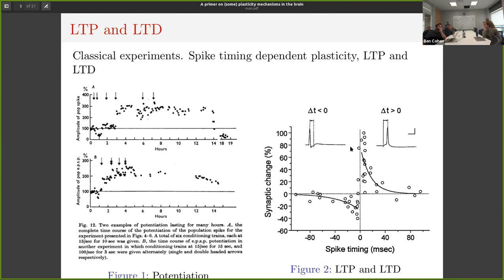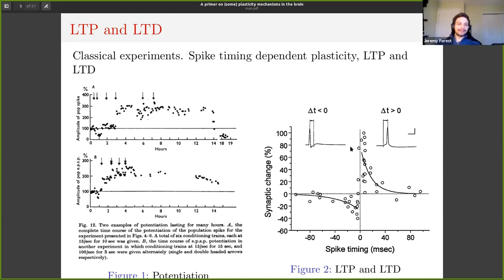Potentiation and depression are two opposite ways a synapse can respond to stimulation. Depression means that after an event occurs, the synapse will respond less to the same type of stimulation — meaning the weight is going to be reduced. Potentiation is the reverse: the weight is going to be increased after stimulation. In this case, the same type of stimulation is an arriving action potential.